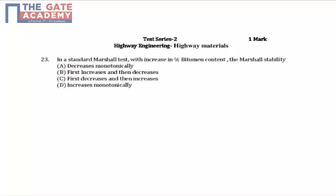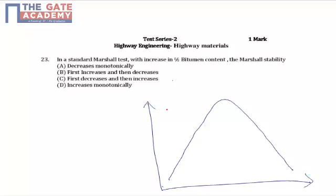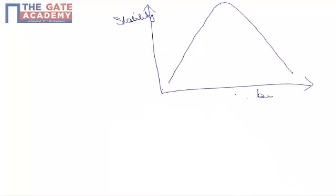Some flow curves are drawn showing the variation of flow value of a specimen with percentage bitumen content, and some void ratio curves show the variation of void ratios with change in bitumen content. If we talk about Marshall Stability, it follows a pattern where it first increases and then decreases. If this axis is stability and this is percentage bitumen, the curve shown in blue is the Marshall Stability curve.